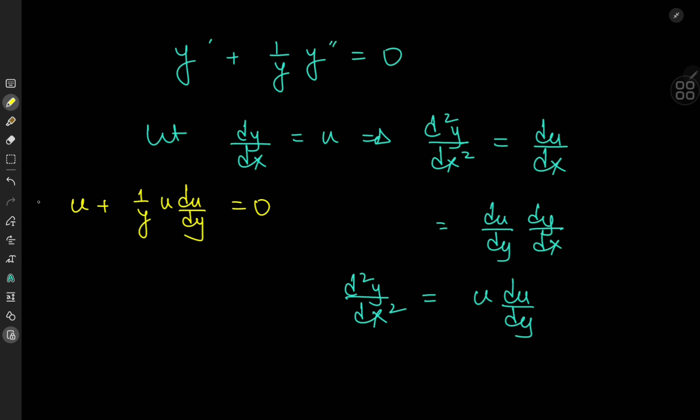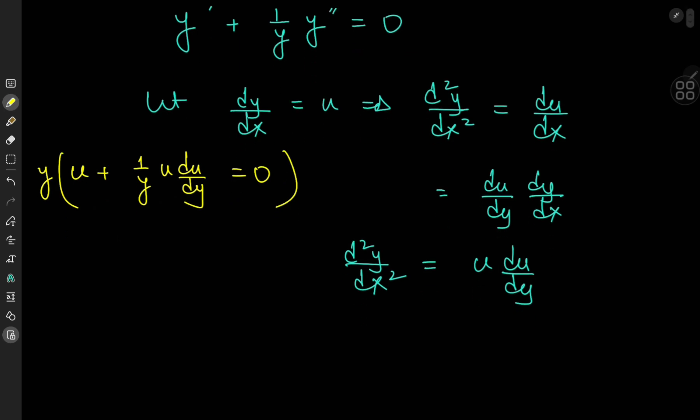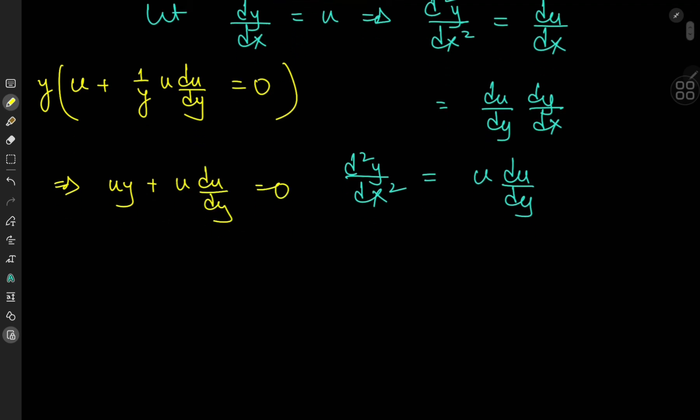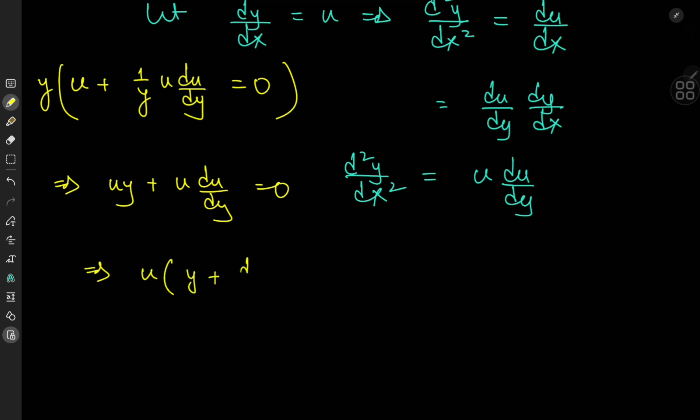Now we can expand using the y term here. We know that y is non-zero because of the shape of this equation. So this implies that uy plus u times du by dy equals 0, and we can factor out a u term. So we have y plus du by dy equal to 0, and this implies that we either have u equal to 0 or we have y plus du by dy equal to 0.